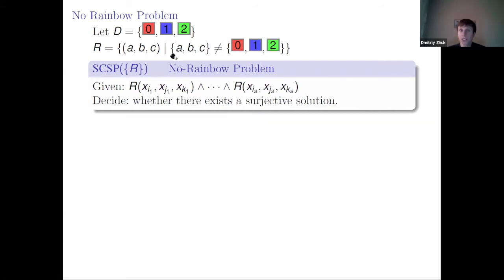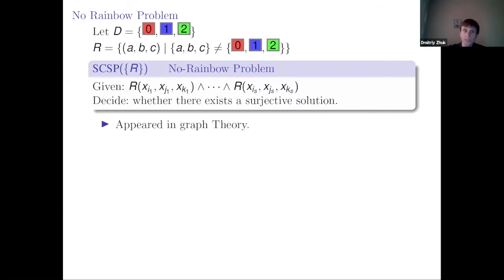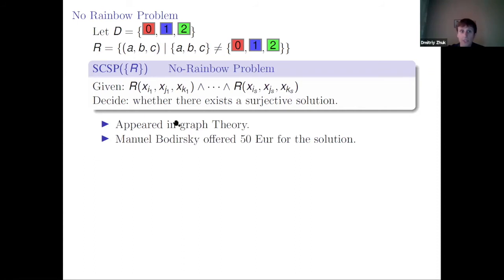The no rainbow problem is just surjective CSP over R: given a conjunction of relations from R, we need to decide whether there exists a solution containing all three colors. CSP over R is trivial because we always have the trivial solution zero, zero, zero. This problem appeared in graph theory many years ago, and Manuel Bodirsky offered 50 euros for the solution to its complexity — I believe about ten years ago.